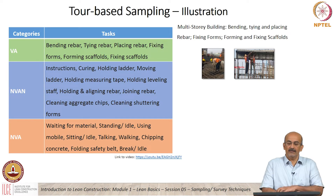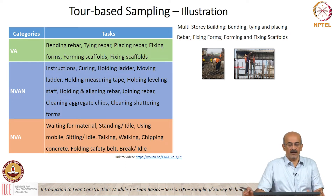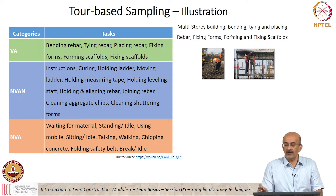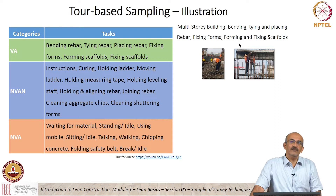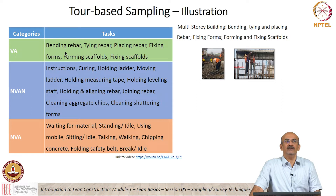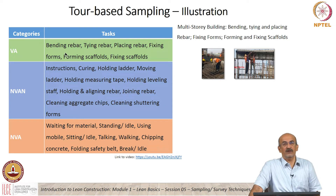Here is an example. What you have taken is a multi-storey building where all of these activities are going on: bending, tying, placing, form work, fixing scaffolds. The team that did this chose to classify value added as these activities here. You can see bending rebar, tying rebar, placing, fixing — all of that.